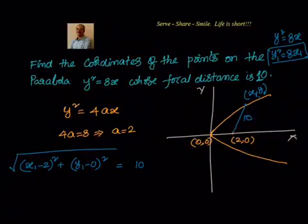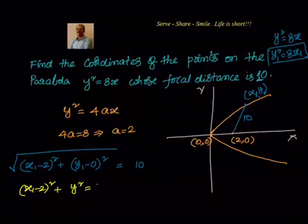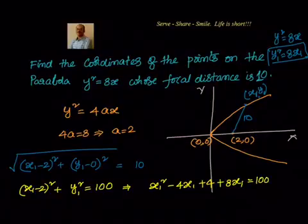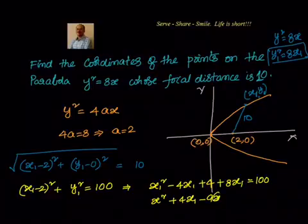Squaring both sides: (x1 − 2)² + y1² = 100. Expanding: x1² − 4x1 + 4 + y1² = 100. We replace y1² with 8x1, giving x1² − 4x1 + 4 + 8x1 = 100, which simplifies to x1² + 4x1 − 96 = 0.